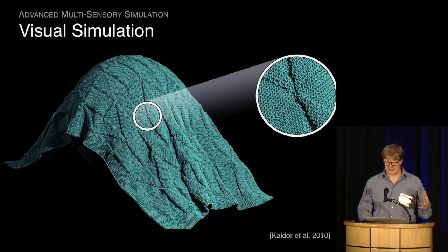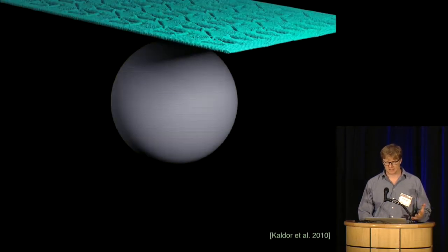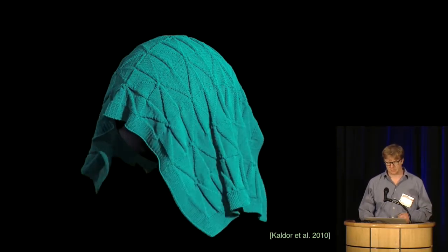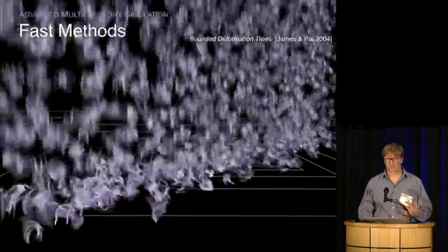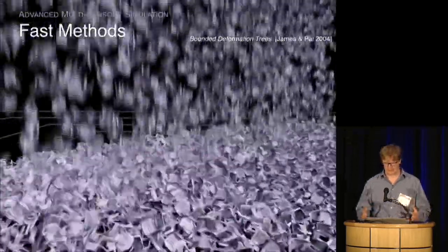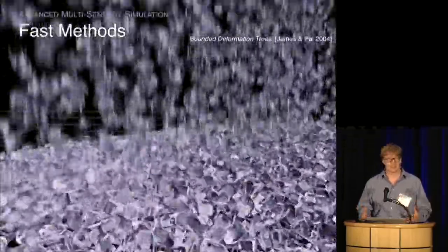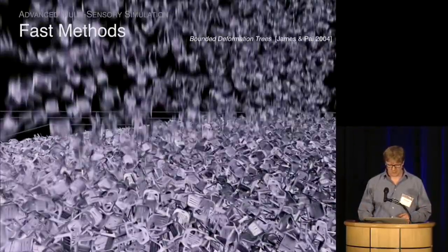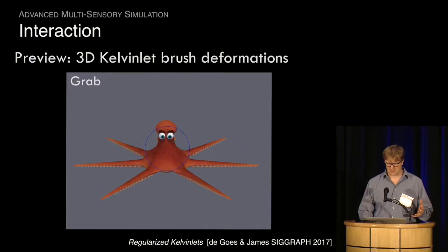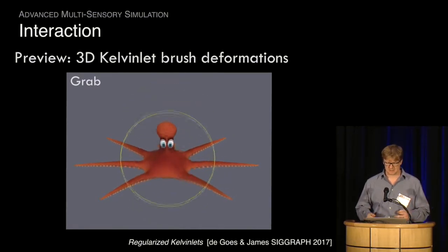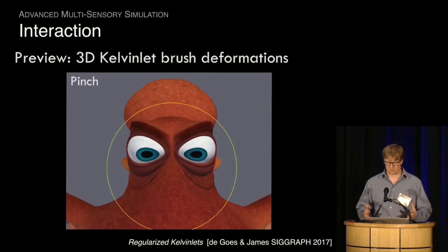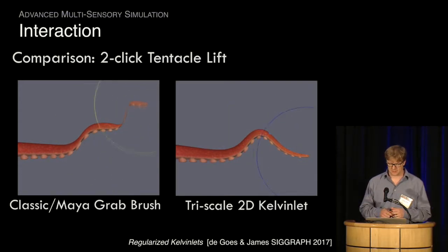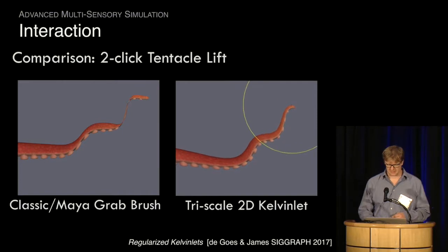A lot of my work in computer graphics has to do with simulating deformable systems, things like cloth. Here's a yarn-level system of cloth that we're doing to model textiles and other new fabric designs. I've also worked on algorithms for simulating things really fast — for example, a simulation from 14 years ago that ran in a Java applet because the system was a hundred times faster than previous methods. Here's some work I've done at Pixar on making interactive deformable sculpting brushes based on analytical solutions of elasticity.